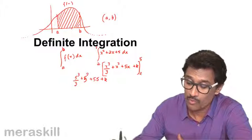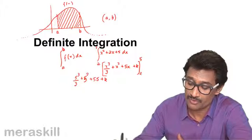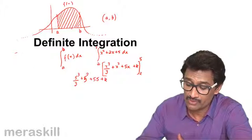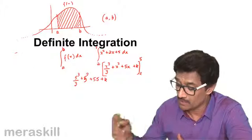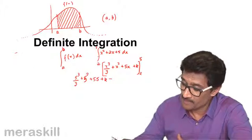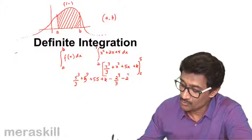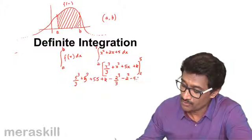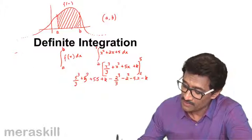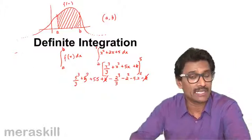That will give you this whole thing till here from here to here. From that you subtract away this so you get this part minus the lower limit is 2. So 2 cubed by 3 minus 2 square minus 5 into 2 minus K. So K and minus K will get cancelled.